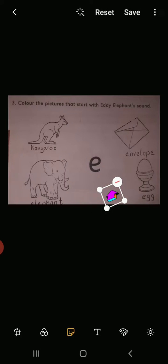Repeat the words all together, then you're going to work on this exercise with your mom. Elephant, egg, envelope, kangaroo.